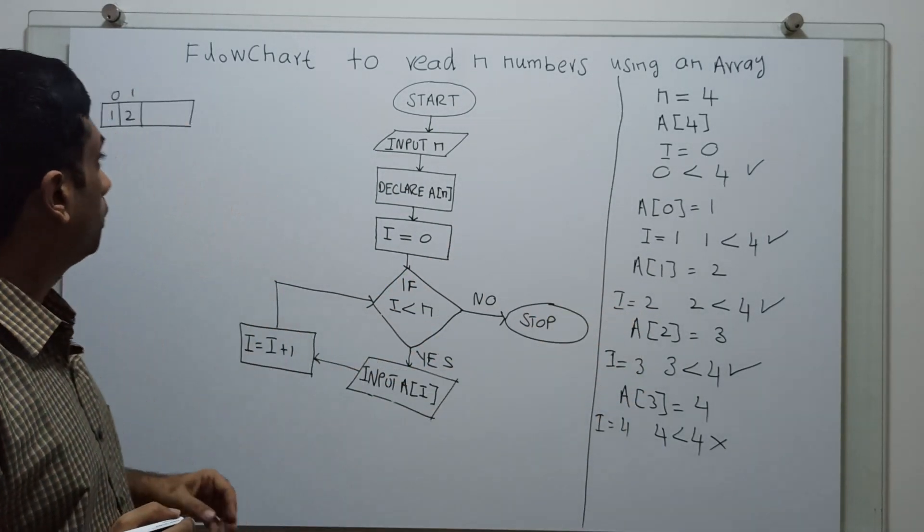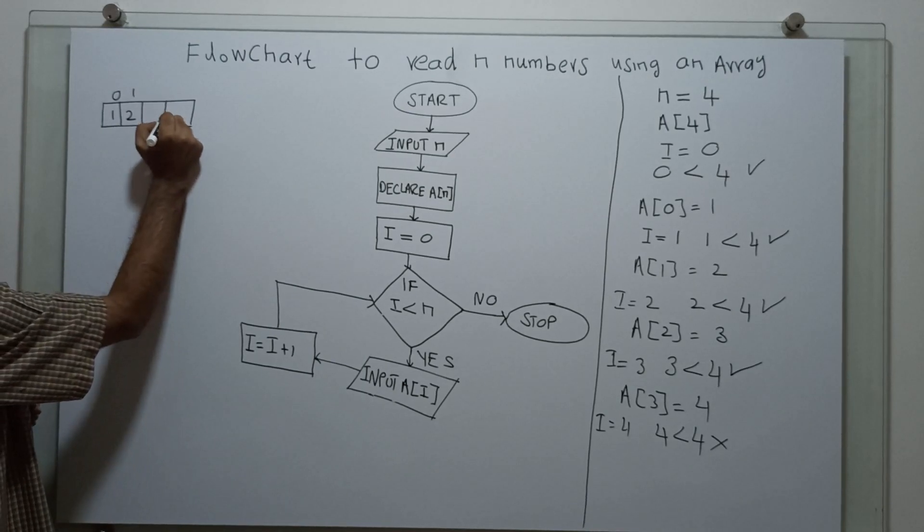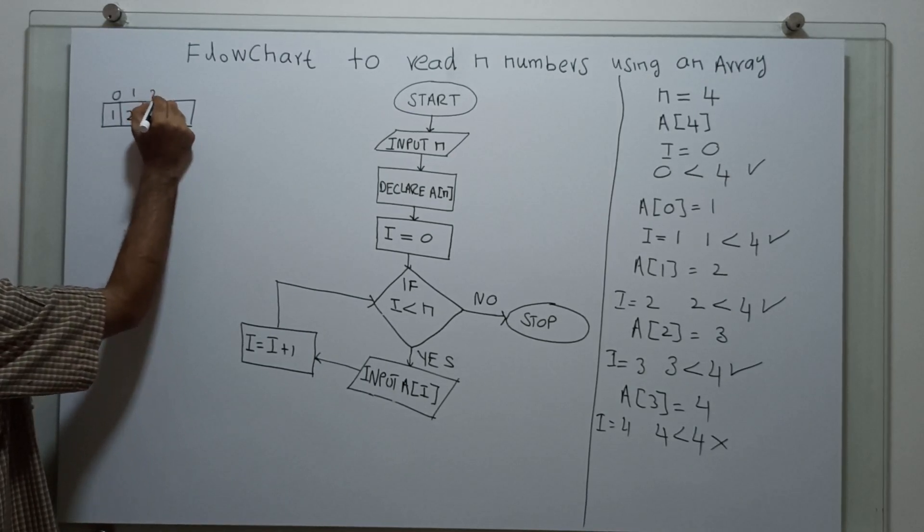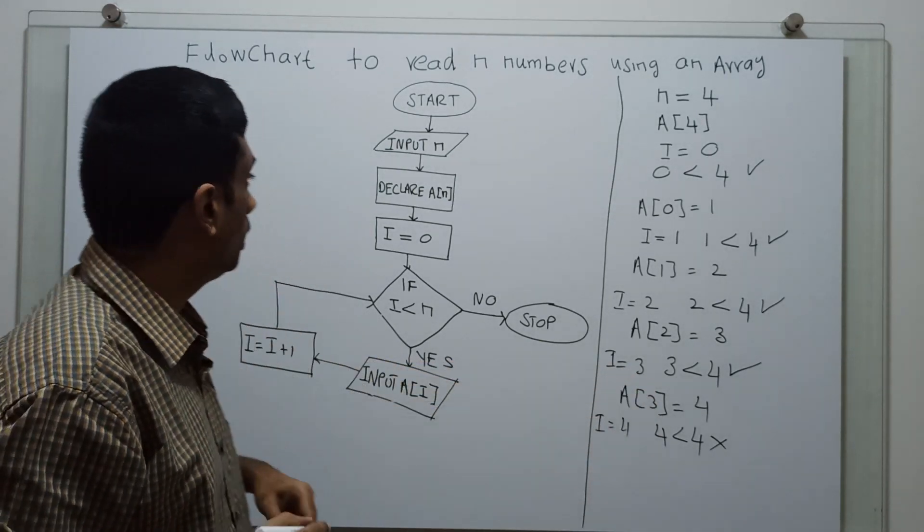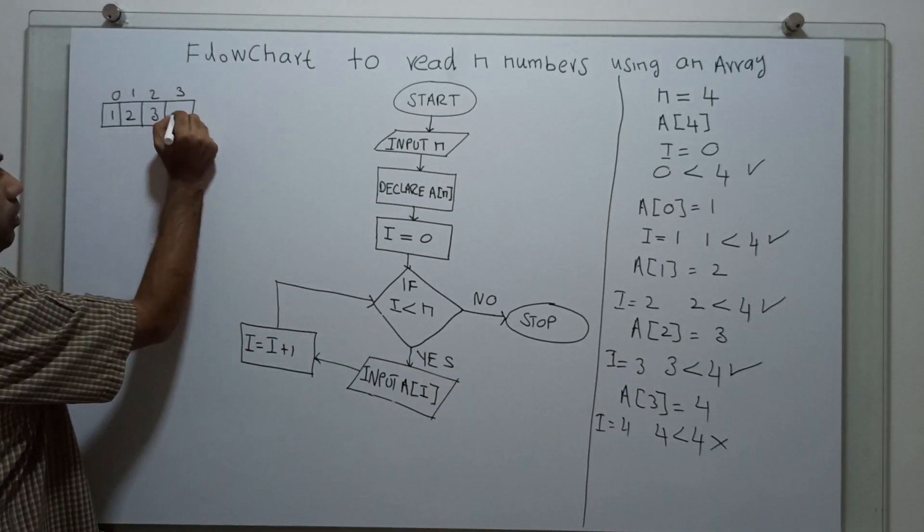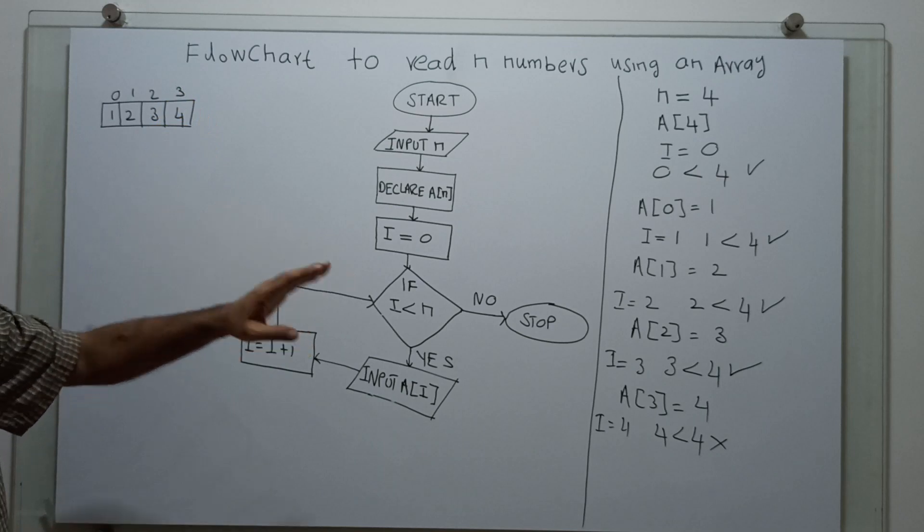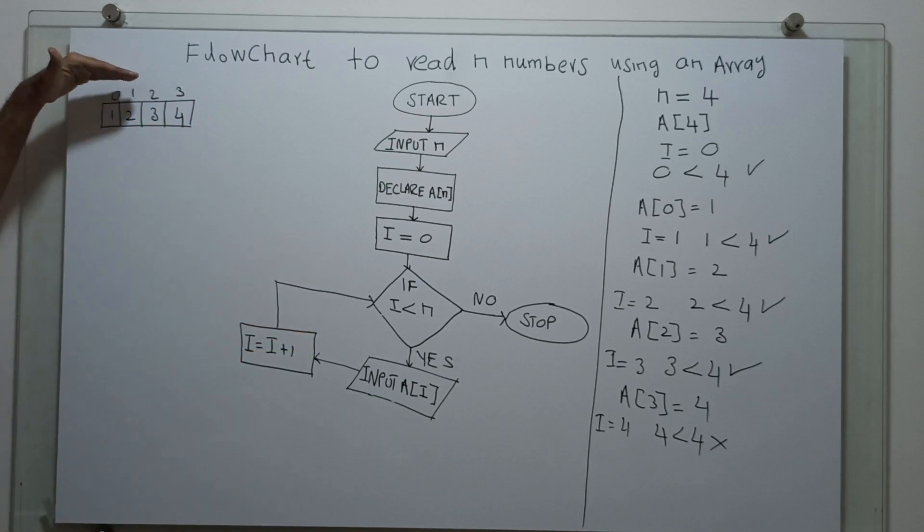Next. Index 2. I store the value 3. Next, index 3. I store the value 4. So, 4 numbers. Index 0, 1, 2, 3.